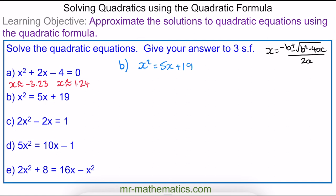For question b, we begin by taking away the 5x and the 19 from both sides of the equation, so these will cancel. So now we have x² − 5x − 19 = 0.